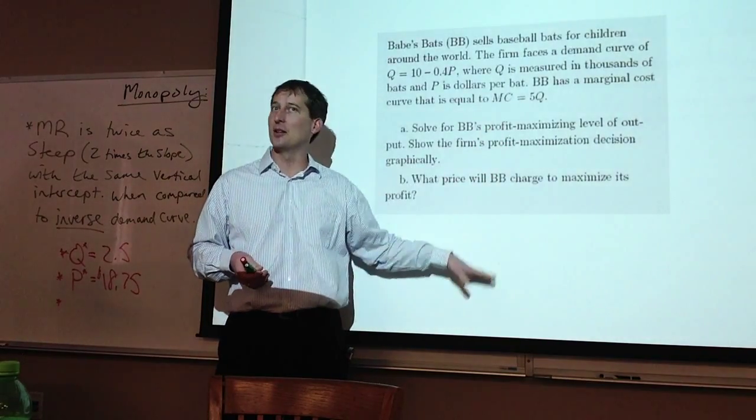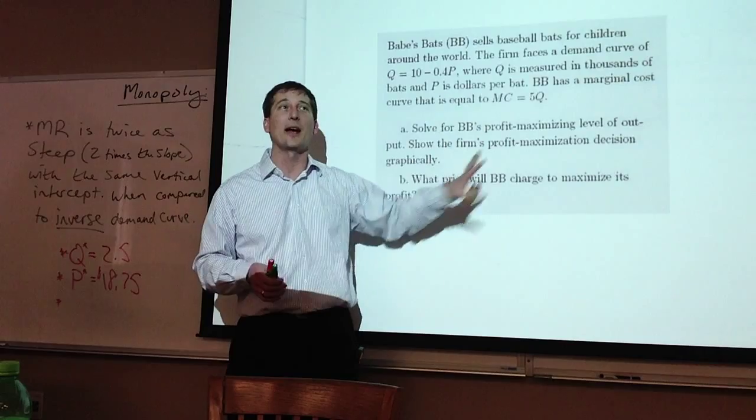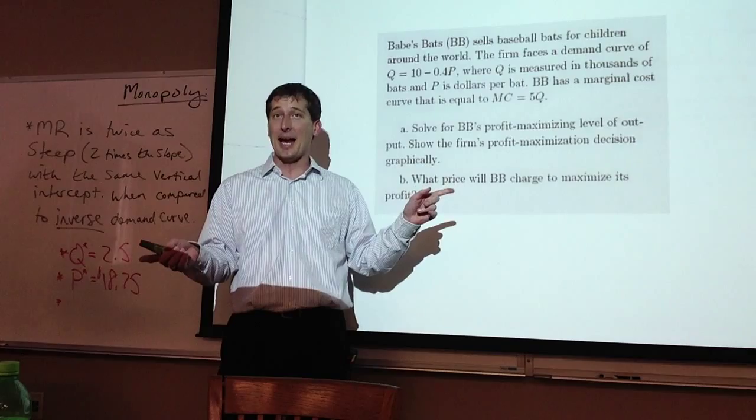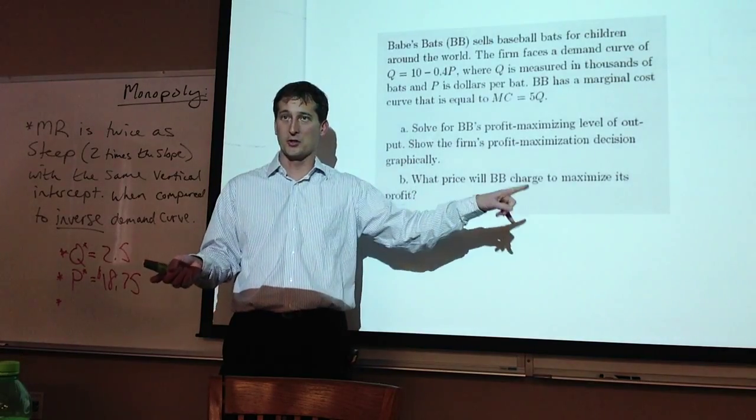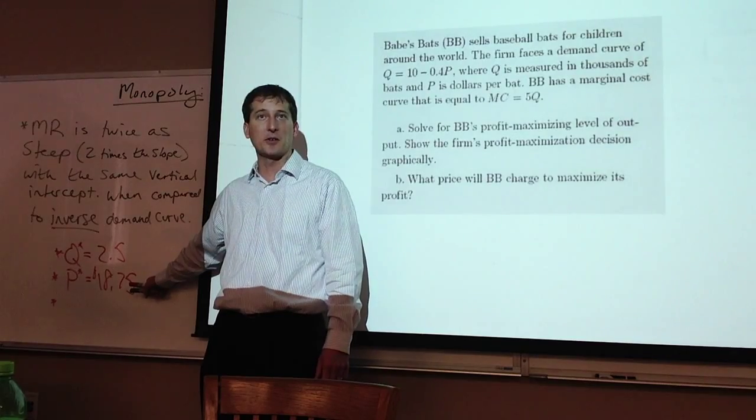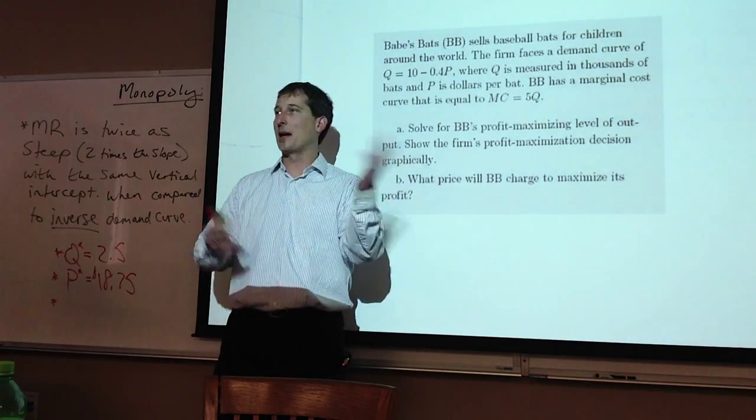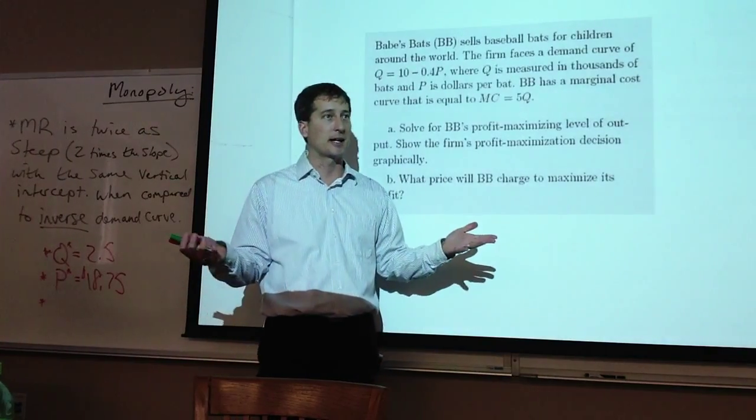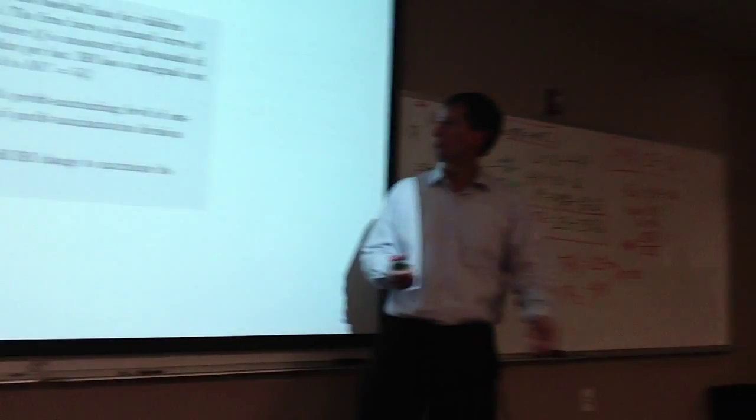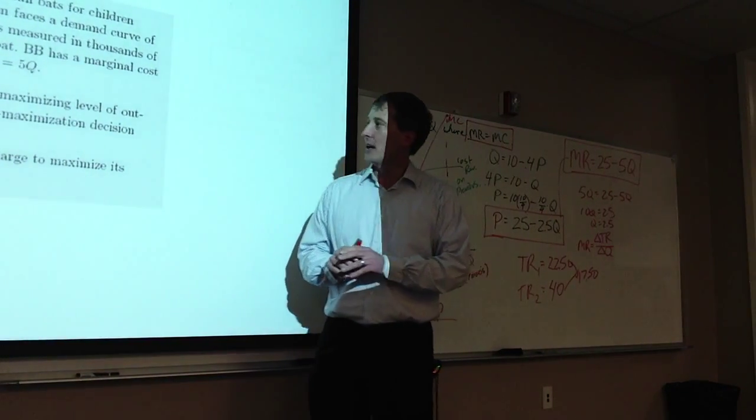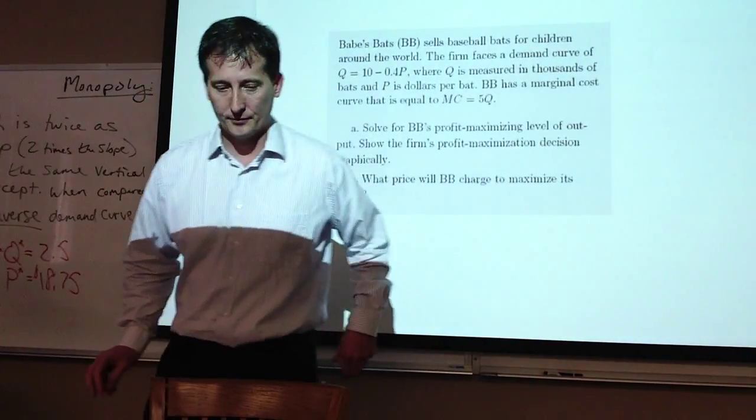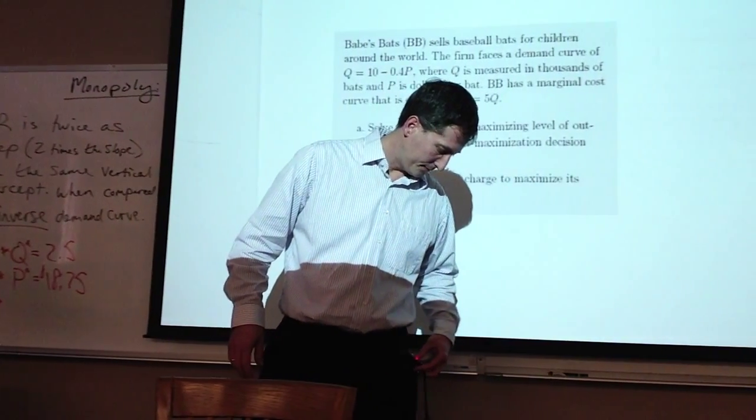All we have is the variable costs. We don't have any information on fixed costs. We do know this firm is doing the best that they can, producing 2.5 units and charging a price of $18.75, but we actually don't know if they're making money or losing money. But they're doing the best that they can. Okay, well that looks like a good place to wrap up for today.